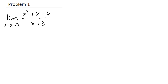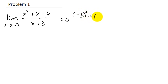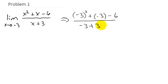Let's look at finding limits where when we plug the x value in — the limit as x approaches negative 3. If we take negative 3 and plug it in for x, we get negative 3 squared plus negative 3 minus 6 over negative 3 plus 3, and this gives us 0 over 0.